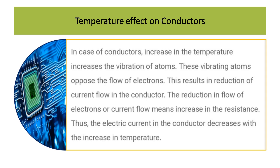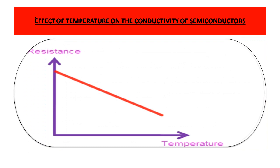Now, what would happen in case of semiconductors? This graph gives a straight answer: the resistance of semiconductors decreases with a rise in temperature. If resistance decreases, then conductivity increases. How will you give a suitable explanation for this curve?